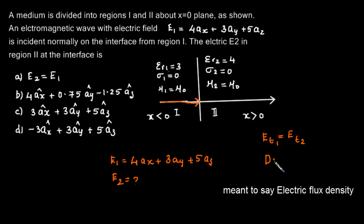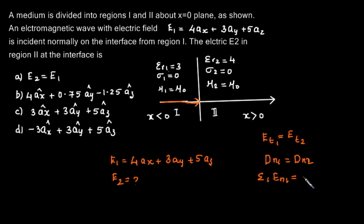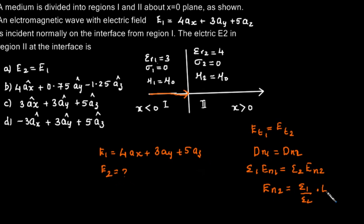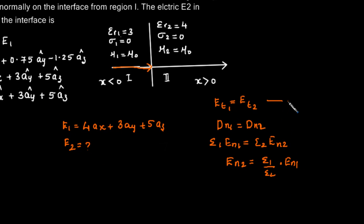Since the medium is charge-free with no surface charge, the normal component of magnetic flux density is also continuous. From this we can say epsilon 1 times the normal component of electric field intensity equals epsilon 2 times the normal component of electric field intensity in medium 2. So the normal component in medium 2 is epsilon 1 over epsilon 2 times En1. These are the two boundary conditions we apply. Since the interface is at x equal to 0.